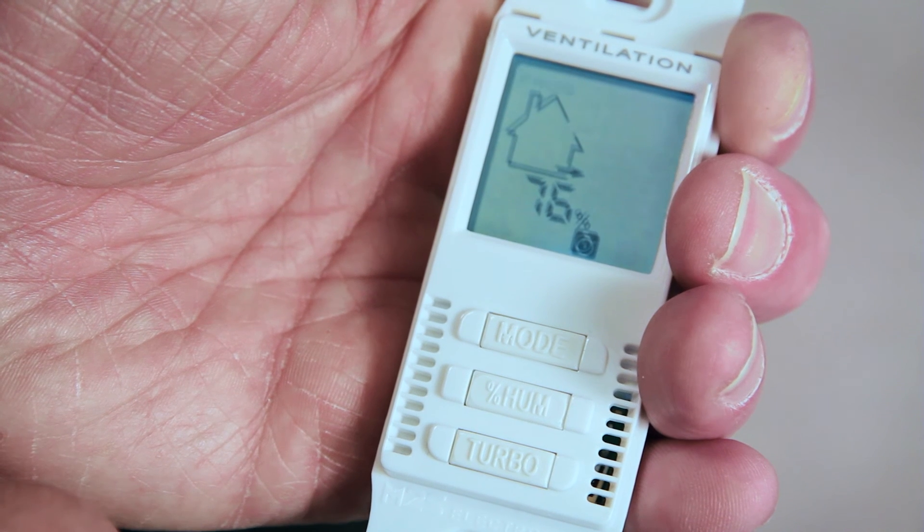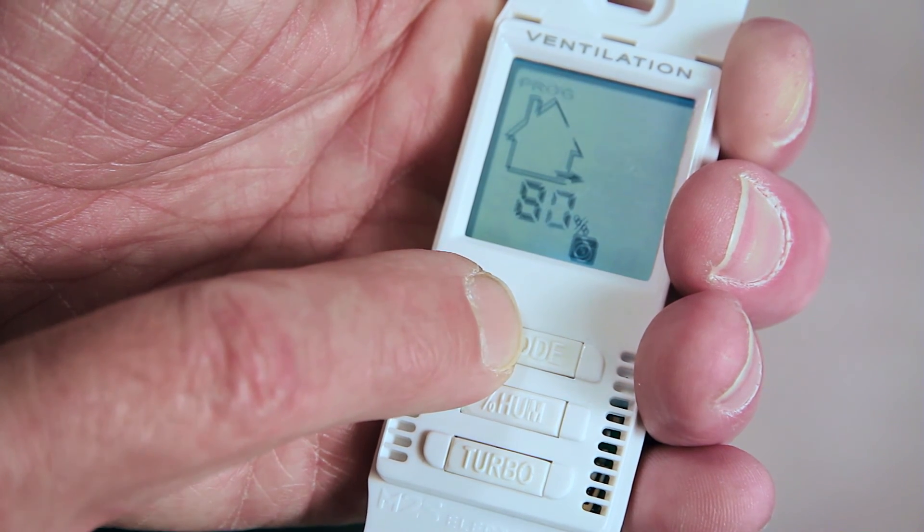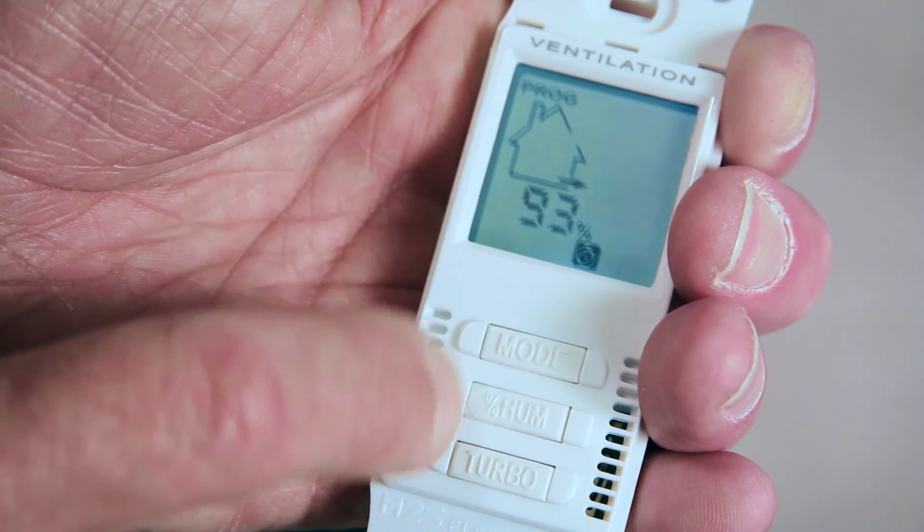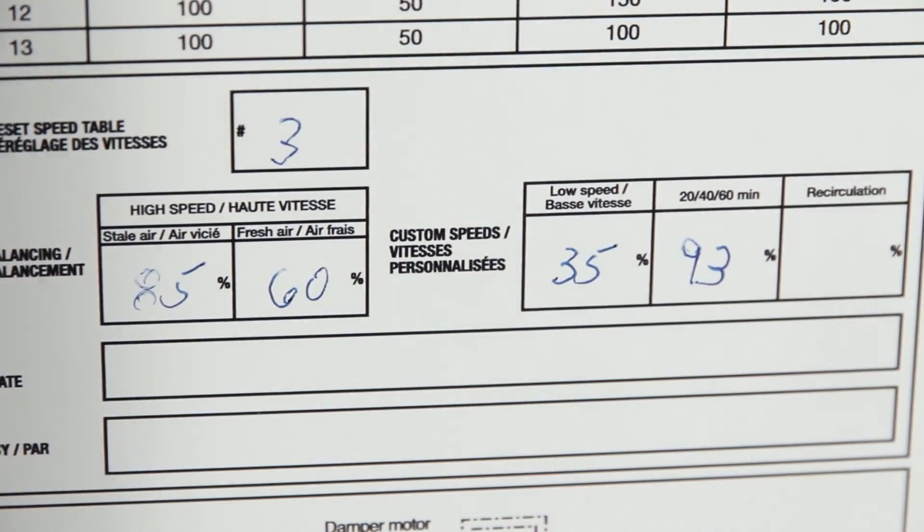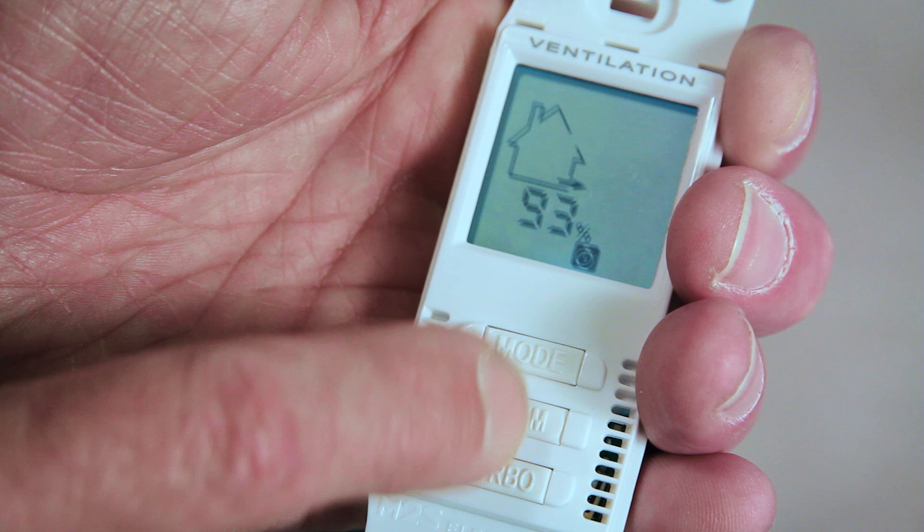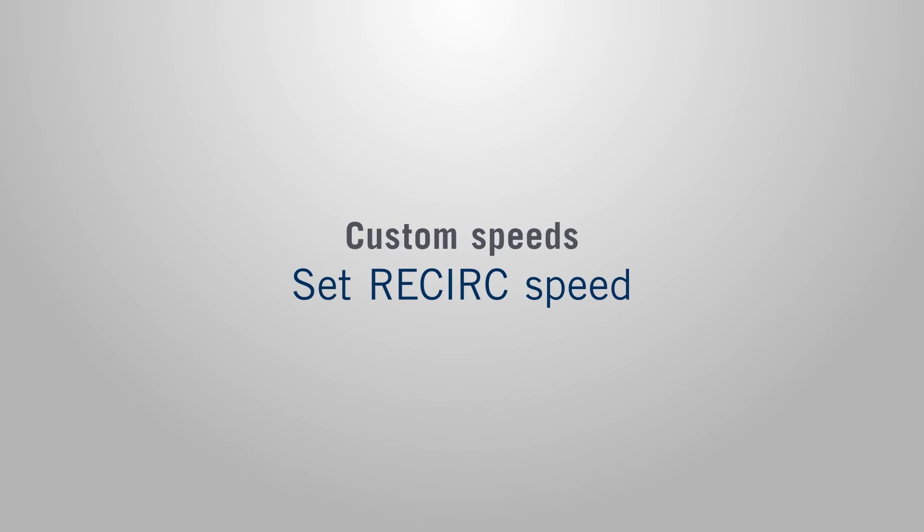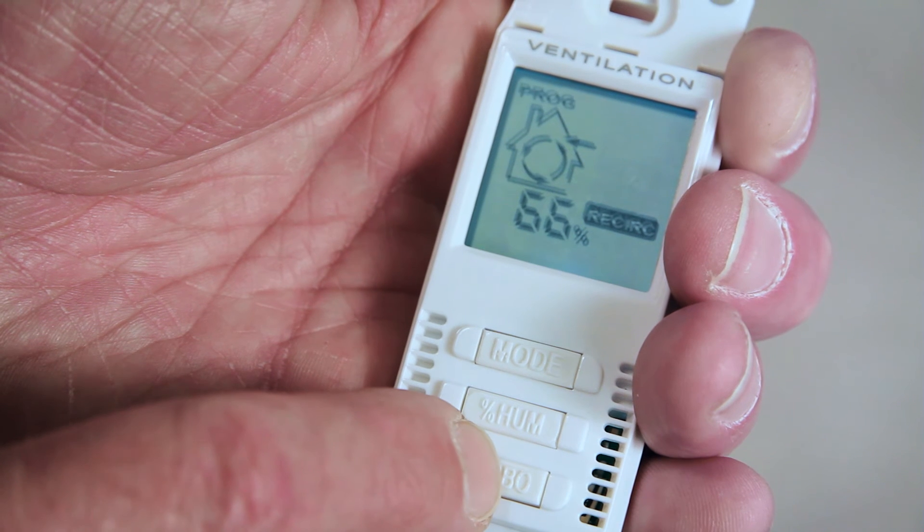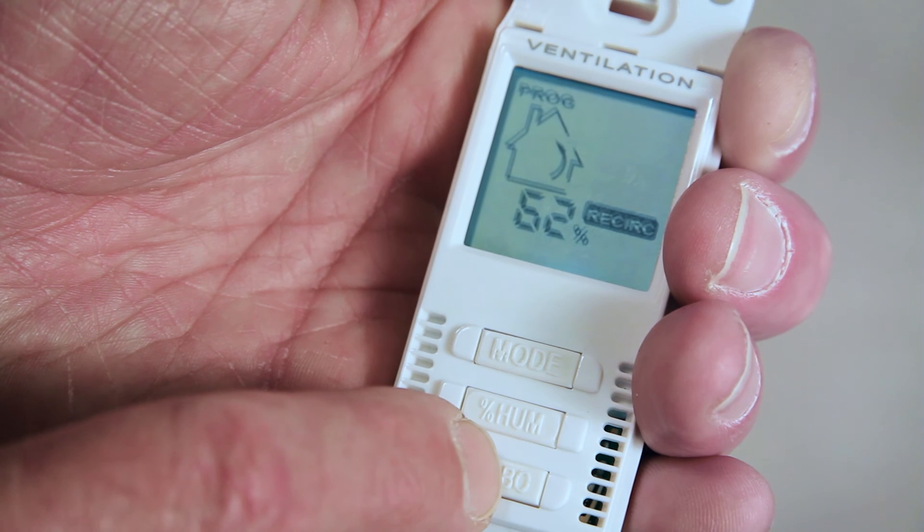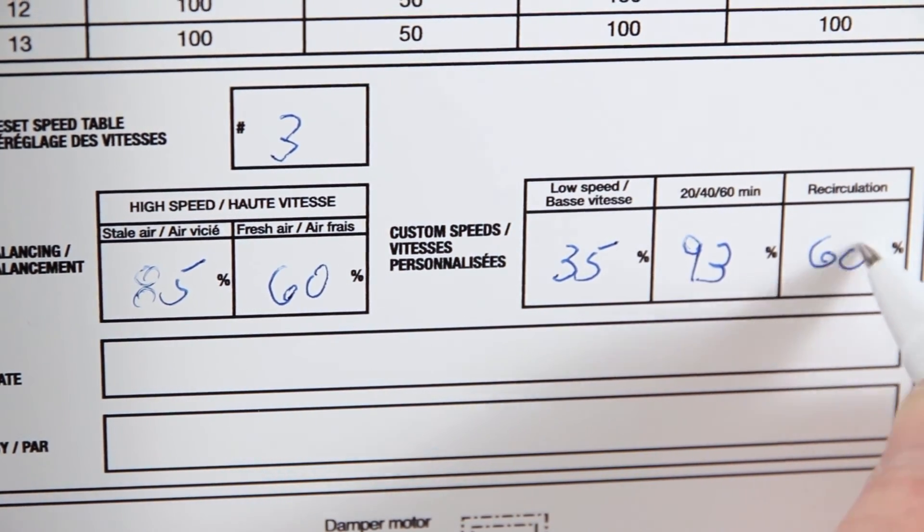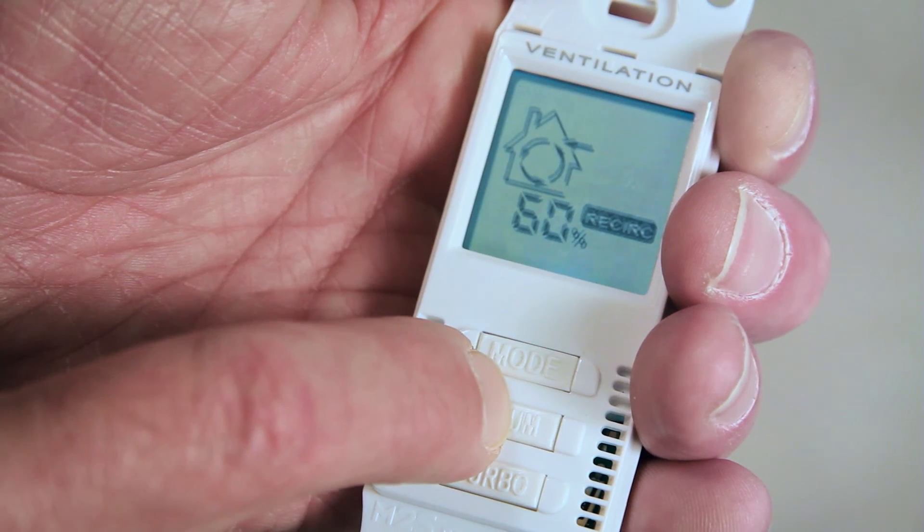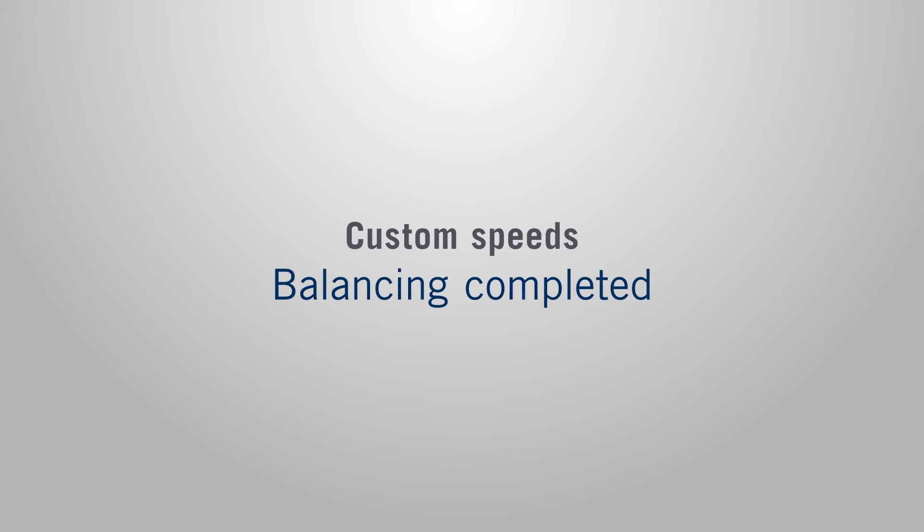At this step, the screen will show you the bath fan icon value to be set. Adjust the airflow until the reading on the pressure gauge reaches the desired CFM value and take note of the setting value at this step, as it will disappear by pressing the accept button. Press the middle button to accept the chosen percentage. The custom speed balancing process is now completed.